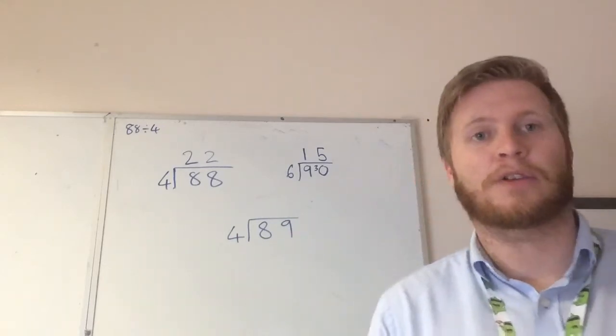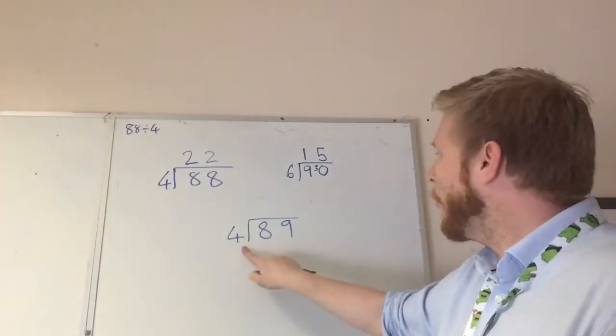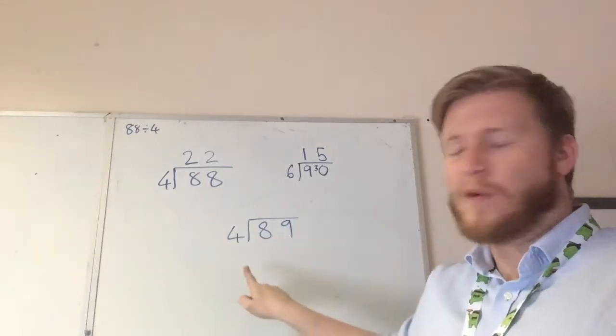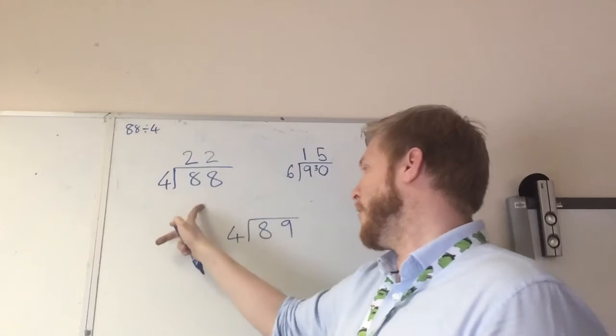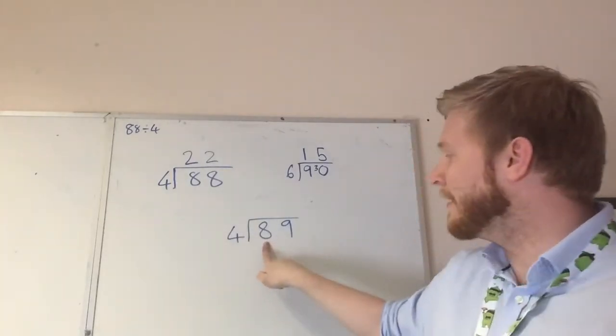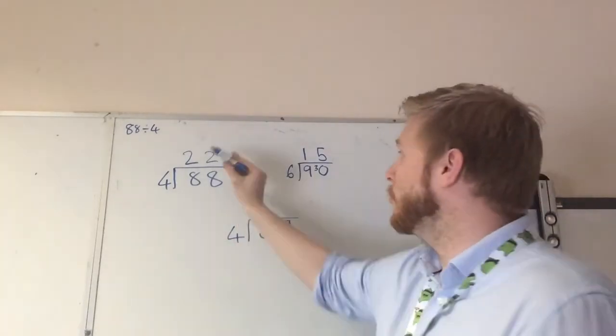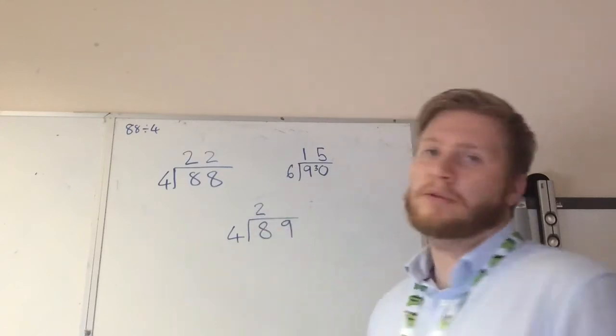Last one. This one's a little bit of a harder one. We've got 89 divided by 4. Now you're saying, why is this so much harder when it's only 1 more than that? Well, let's see. Let's have a look. First, we need to do 8 divided by 4. We know that's 2, because we've done it here. So we've got our 2 there.